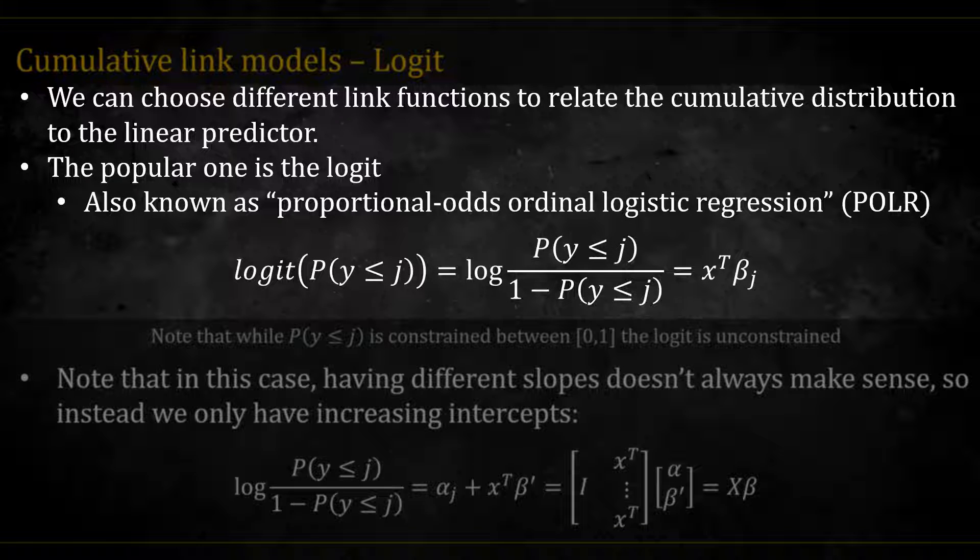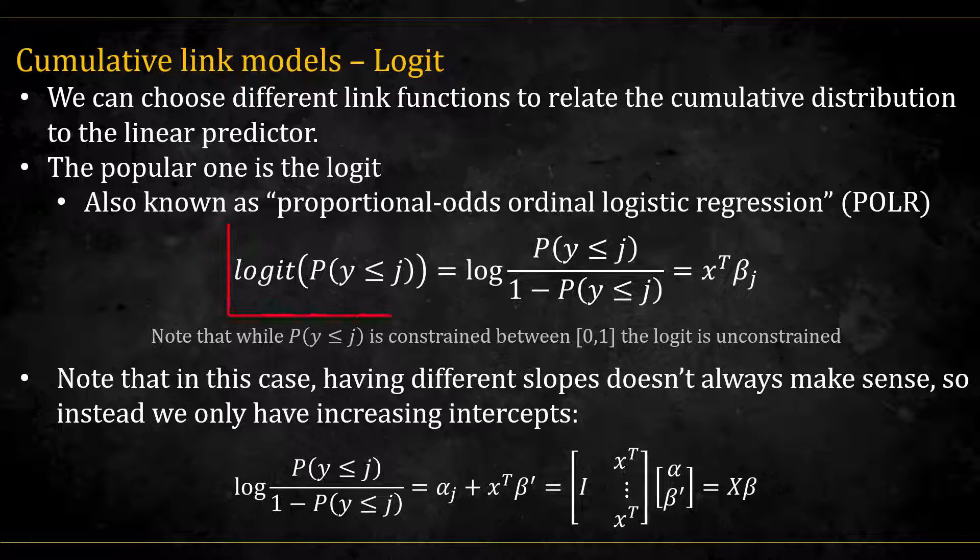We can use different link functions to relate the cumulative distribution to the linear predictor. The popular one is the logit of the cumulative probability. This model is also known as the proportional odds ordinal logistic regression, or POLR. We relate the logit of the CDF to the linear predictor. Again, we are using the logit as a way to remove the constraints of the probability. A probability is constrained between 0 and 1, but the log odds of it is expanded to the whole real line.